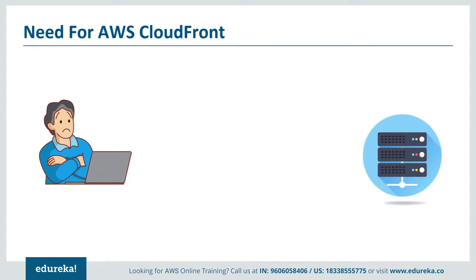Suppose you are based in the USA and that website's server is based in Australia. When you make a request for a particular object, image, or content, your request is sent to the server in Australia and then it gets delivered to you. There are quite a few interrelated networks involved which you are not aware of — the content directly gets delivered to you and you feel that you type in a URL and the content is immediately available, but that is not how it works.